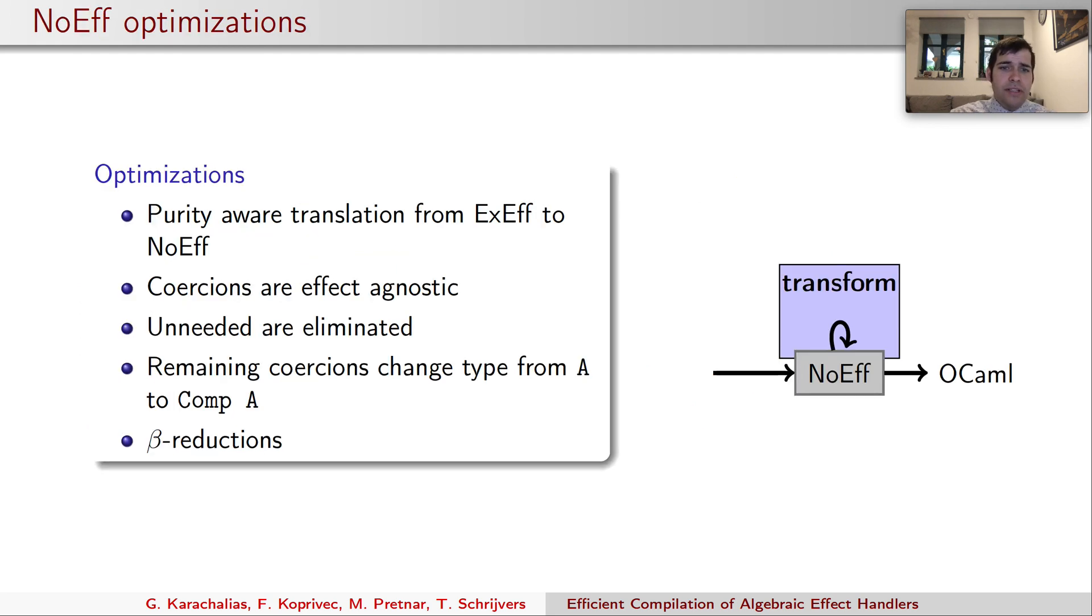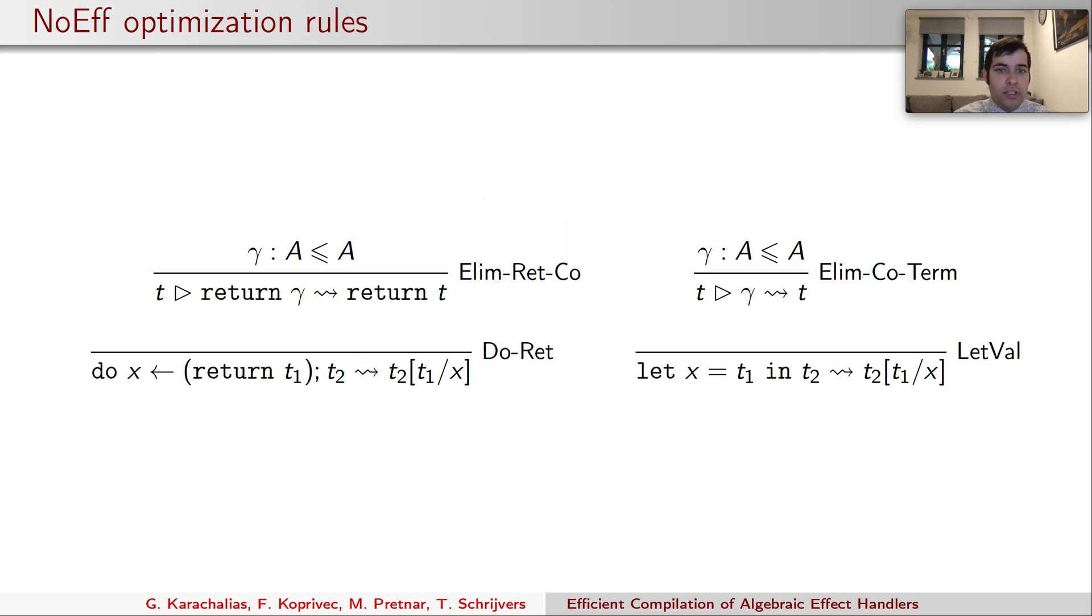Removal of explicit effect information and simplification of coercions adds new optimization opportunities. Coercions are also effect agnostic as they only coerce to computation type without the full effect information. So multiple coercions can be eliminated and pure terms can be translated in a more efficient way and this is the core of NOF optimizations. So NOF has only a few optimization rules. We either eliminate coercions or do some inlining presented by the coercion optimization.